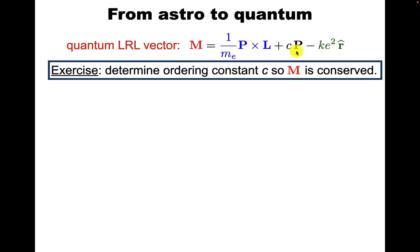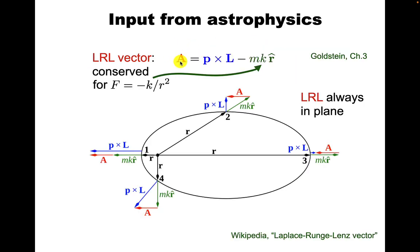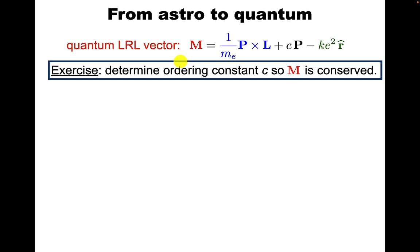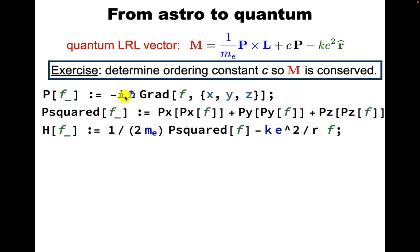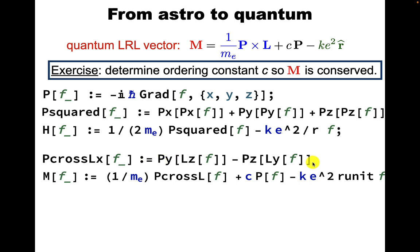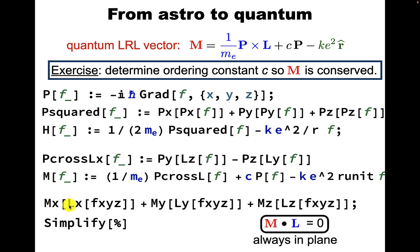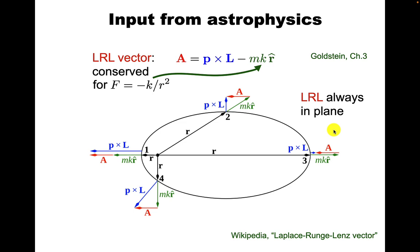In the hydrogen atom, we may have to include an ordering term. You can determine this constant c in front of this ordering term so that this vector M is conserved, where m is the quantum analogy of the A vector. So P is defined as minus iℏ of the gradient of f, P squared you form like this, and the Hamiltonian is then defined as P²/2m plus the electric potential energy, which is negative. And having implemented M as an operator on functions, we can easily check that M dot L is in fact zero. This just captures what we saw before - the LRL vector is always in the plane.